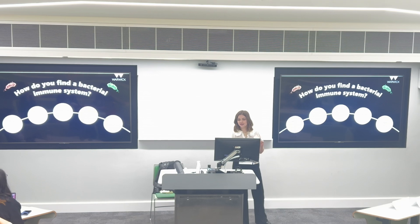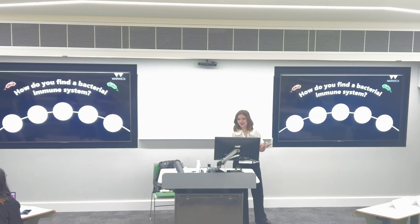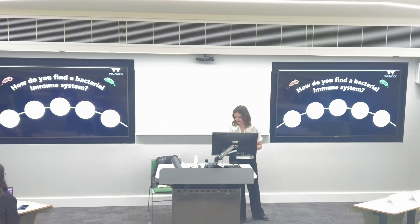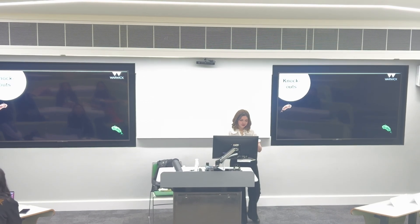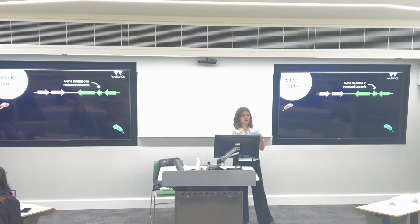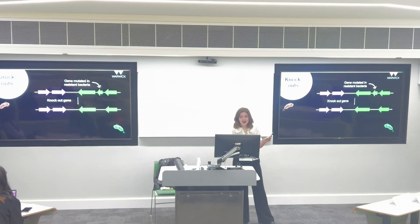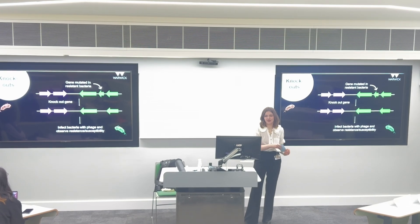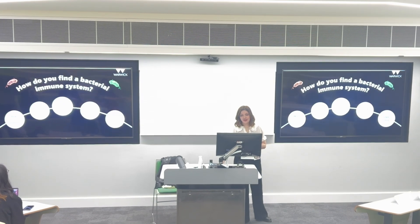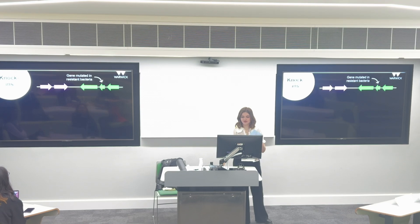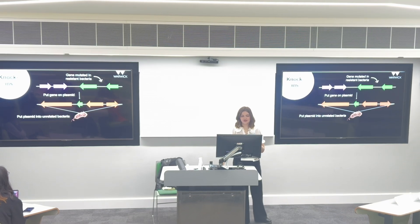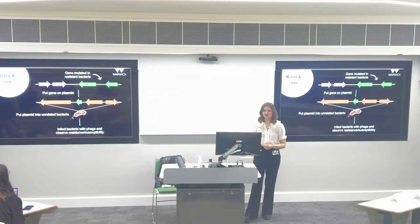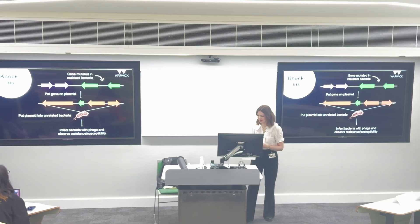Now you have your system identified right down to the gene. The way to validate or look further into the functions of these genes is simple — you put it into a place it wasn't and take it out of a place it was. You can do a knockout: take the gene that's mutated in resistant bacteria, knock it out, and see what happens. If that bacteria becomes susceptible to phage infection, there's a good chance it was involved in resistance. Then you can take that same gene from the resistant strain and put it into a strain that doesn't contain it — if you infect that bacteria with phage and it's resistant, you've pretty much validated the gene responsible.